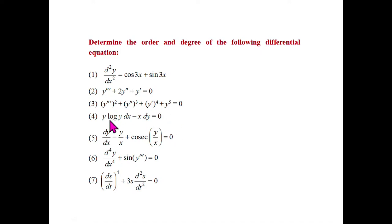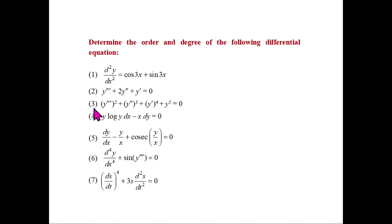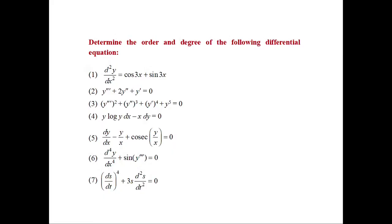Question 4: y log y dx − x dy = 0. Converting to dy/dx form: dy/dx = (y log y)/x. There is only one derivative, first-order, raised to power 1, so order = 1 and degree = 1.